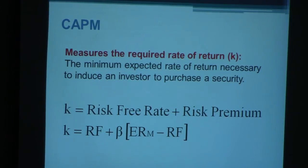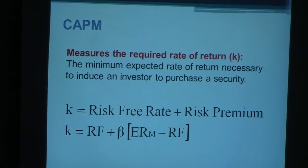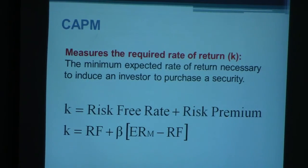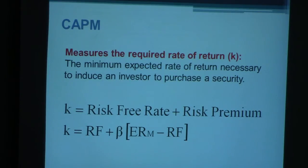The full formula is: K equals RF, the risk-free rate, plus beta times the quantity (expected return of the market minus RF). The expected return of the market is something everyone can analyze — how much the market is expected to return this year. Beta is company-specific: it is the risk factor of a particular company. If a company is very risky, beta is high; if not as risky, beta is low; if less risky than average, beta is less than one. In this course, beta is given to you — you are not expected to calculate it, just to use it to calculate K.